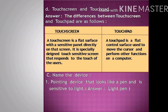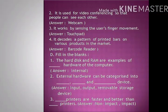Question C: Name the device. Number 1: A pointing device that looks like a pen and is sensitive to light. Answer: Light pen. Number 2: It is used for video conferencing so that people can see each other. Answer: Webcam. Number 3: It works by sensing the user's finger movement. Answer: Touchpad. Number 4: It decodes a pattern of printed bars on various products in the market. Answer: Barcode reader.